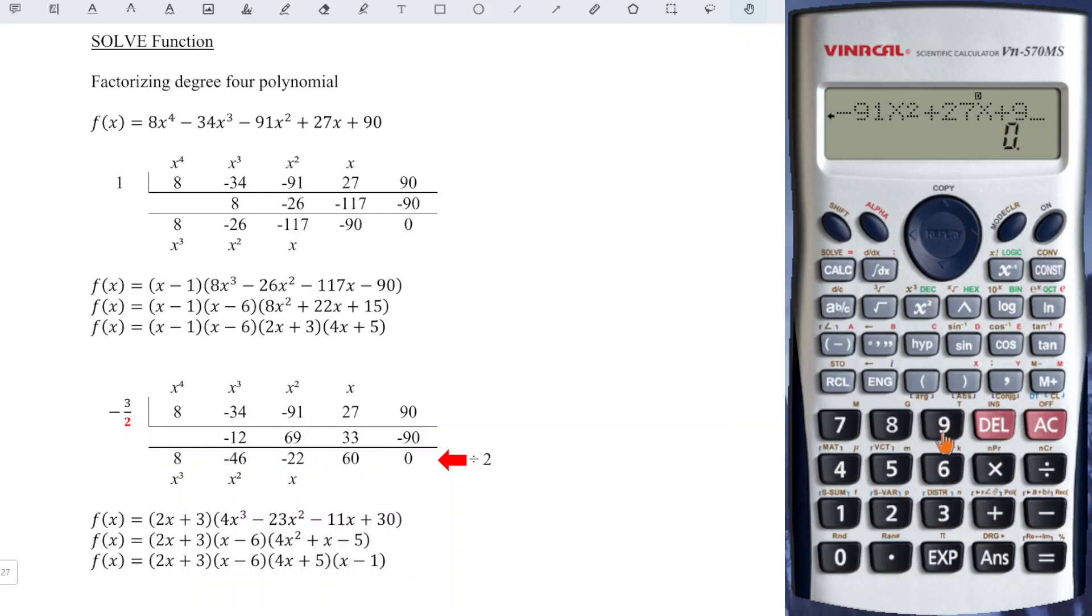And according to the factor theorem, we know that a particular x is said to be zero if and only if f(x) is equal to zero. So we have to set this function to zero. In other words, we need the equal sign. To obtain the equal sign, press alphabet calculate. So we obtain the equal sign and we should set zero.